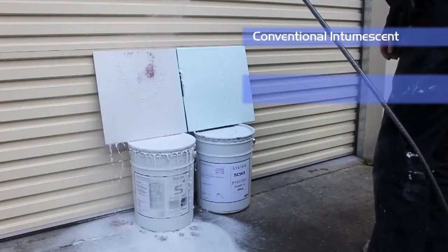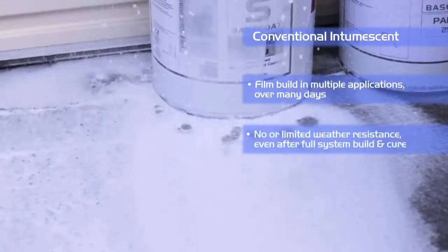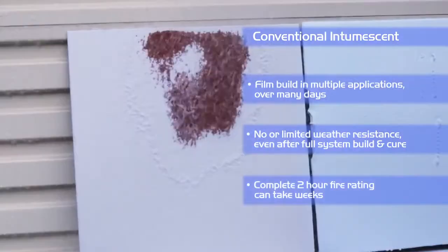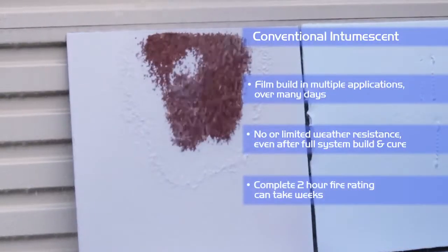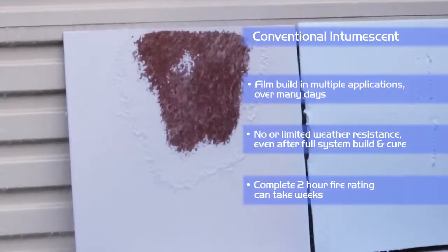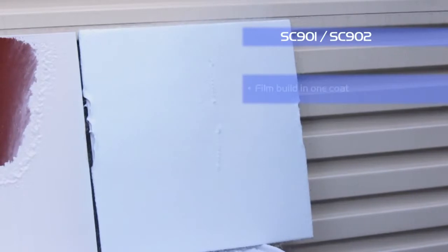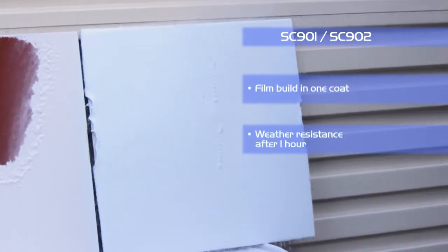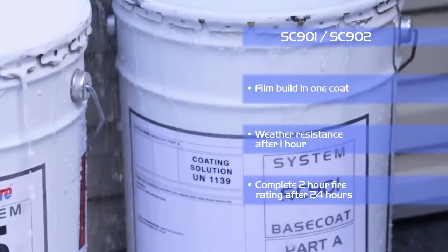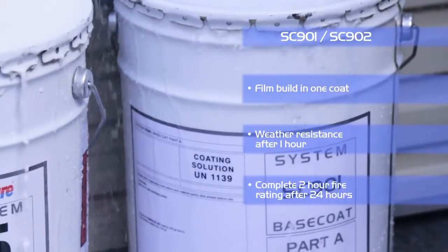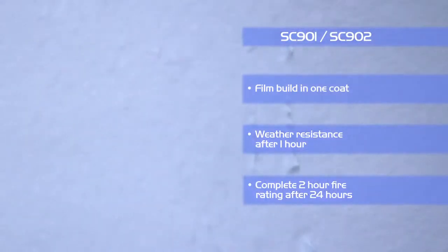Conventional intumescence have limited resistance to environmental conditions during the construction phase and can be easily washed off. The off-site SC901 system is touch dry, weather resistant and over-coatable within 60 minutes. Where required a top seal can be applied the same day and can be transported within 8 hours of coating.